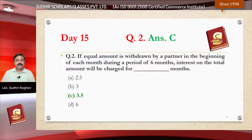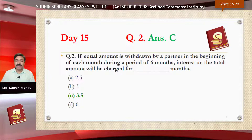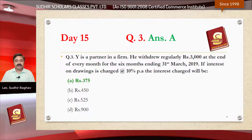Question number two: if equal amount is withdrawn by a partner in the beginning of each month during a period of six months, interest on the total amount will be charged for dash months. The correct answer is option C, 3.5 months.